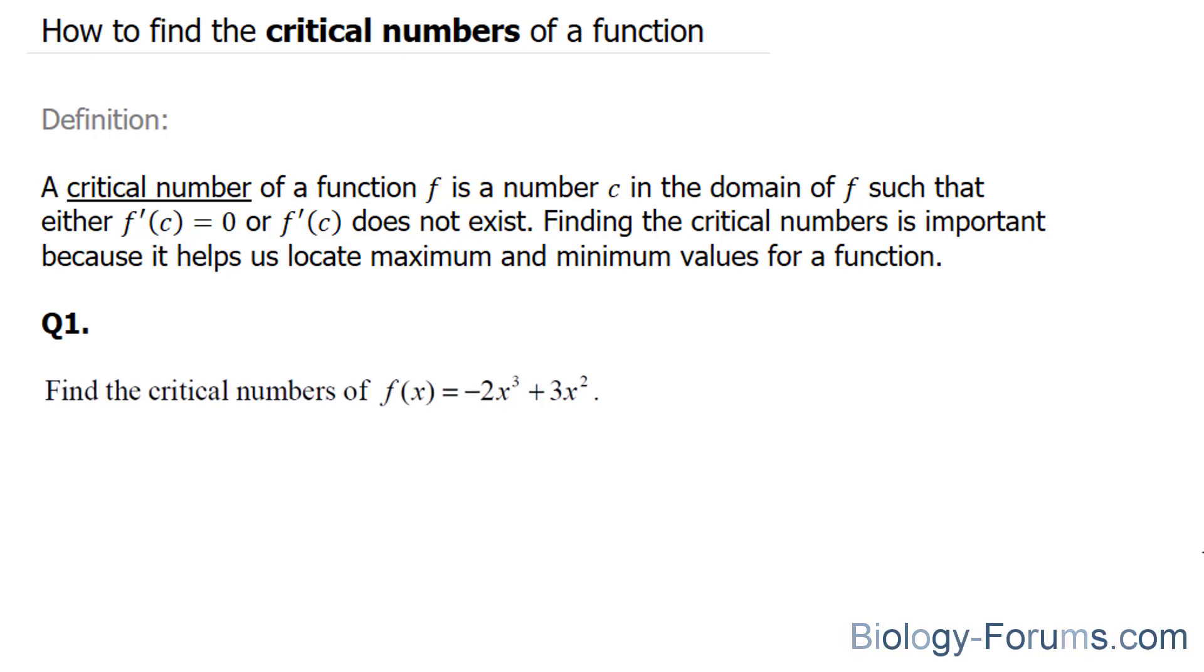The first thing that you want to do when it comes to finding the critical numbers is to find the derivative. We're going to use the power rule for these two terms. We're going to bring this 3 down and subtract that by 1: -2 times 3x³⁻¹ = x². And the same thing here, plus 3 times 2 is 6x. Let's simplify this. We end up with -6x² + 6x.